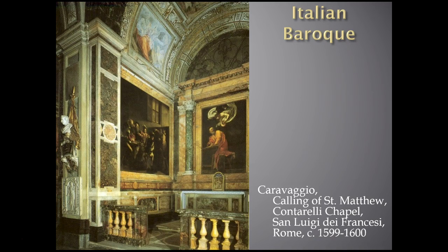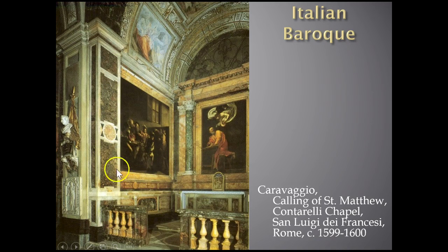Unlike the Renaissance where frescoes were painted directly onto damp plaster spread over walls, Caravaggio started producing large oil paintings on canvas within his studio and then transporting them for installation within the chapel where they would form a coordinated ensemble. Italy really liked fresco, but Caravaggio was one of the first Italians to really start using oil painting on canvas, which would then be mounted on the wall. So he was actually painting in his studio.